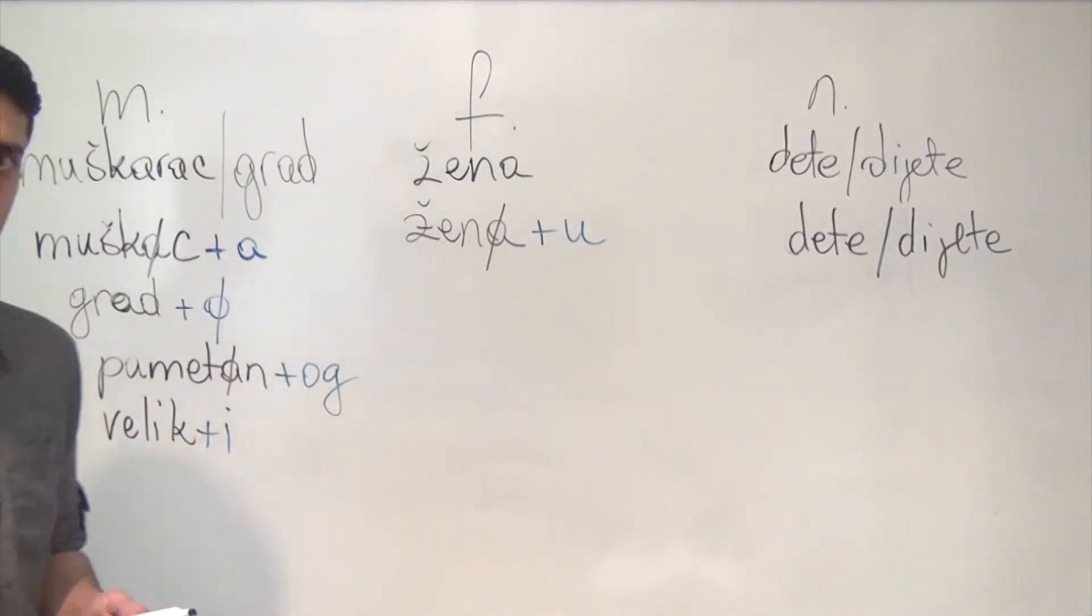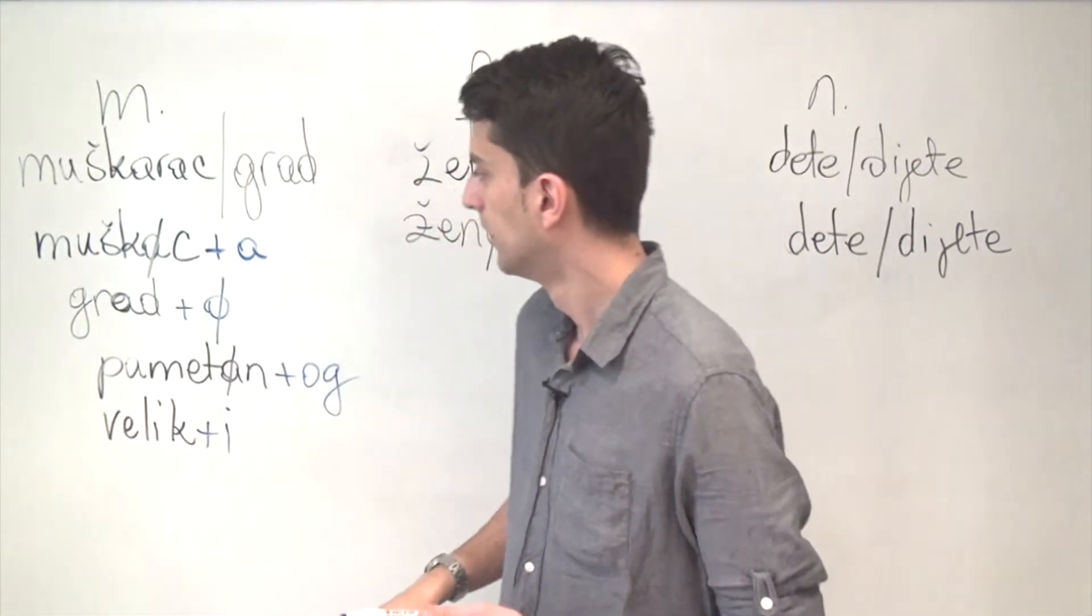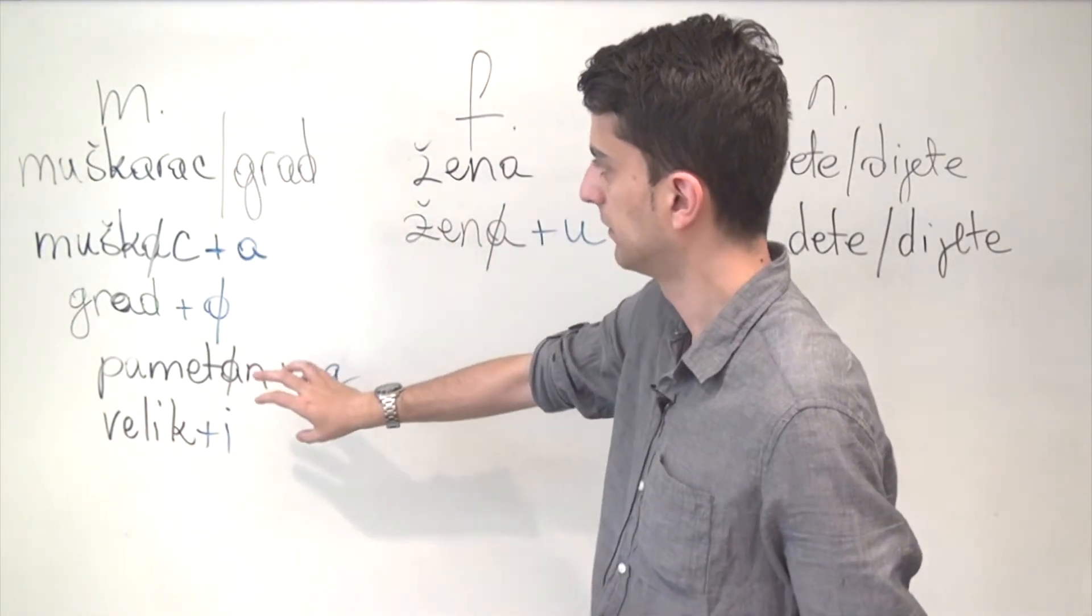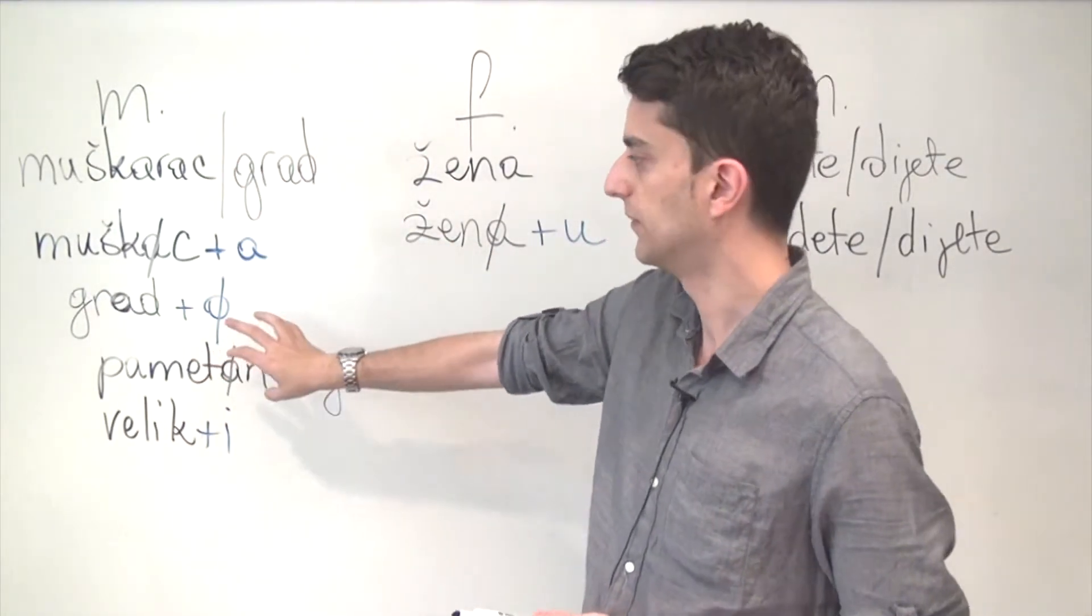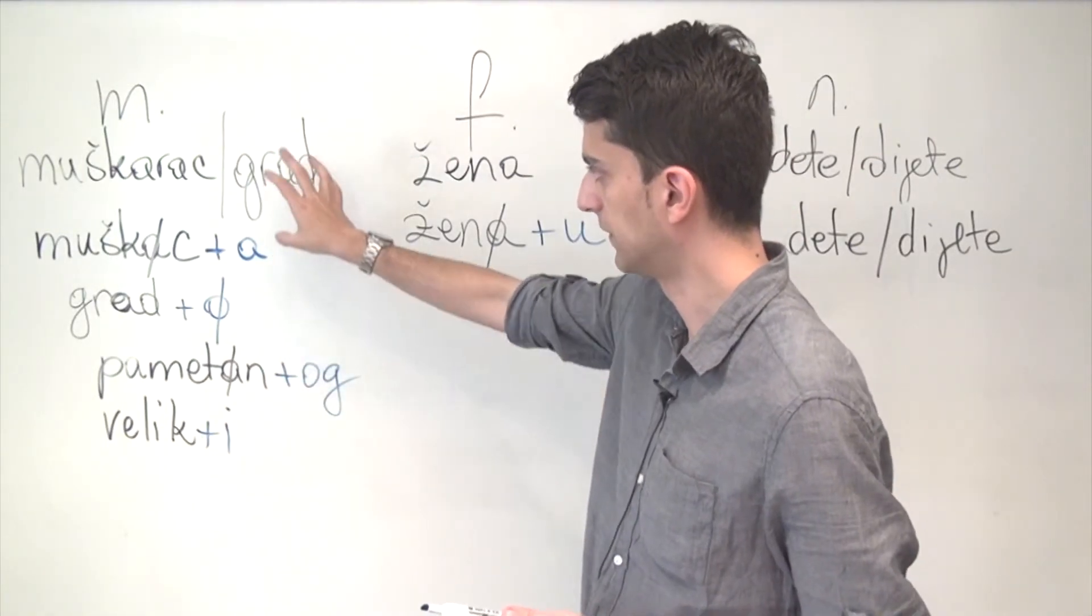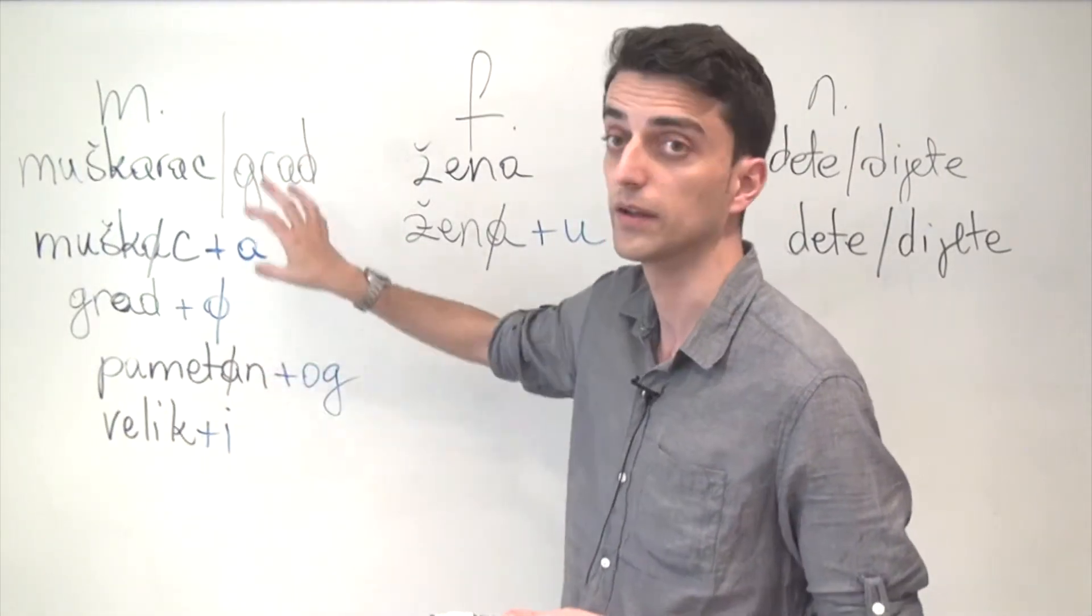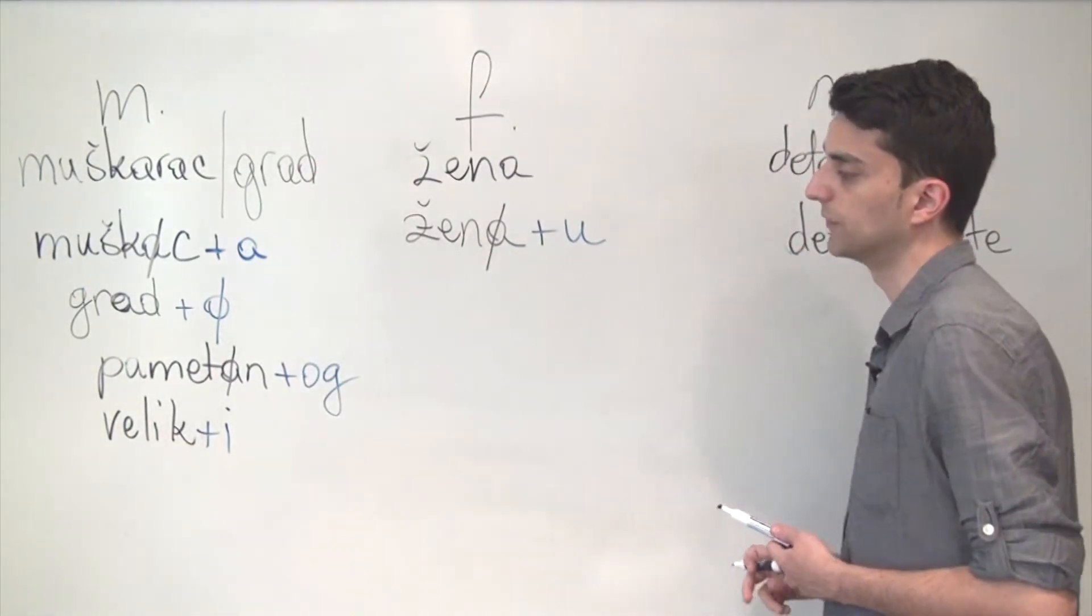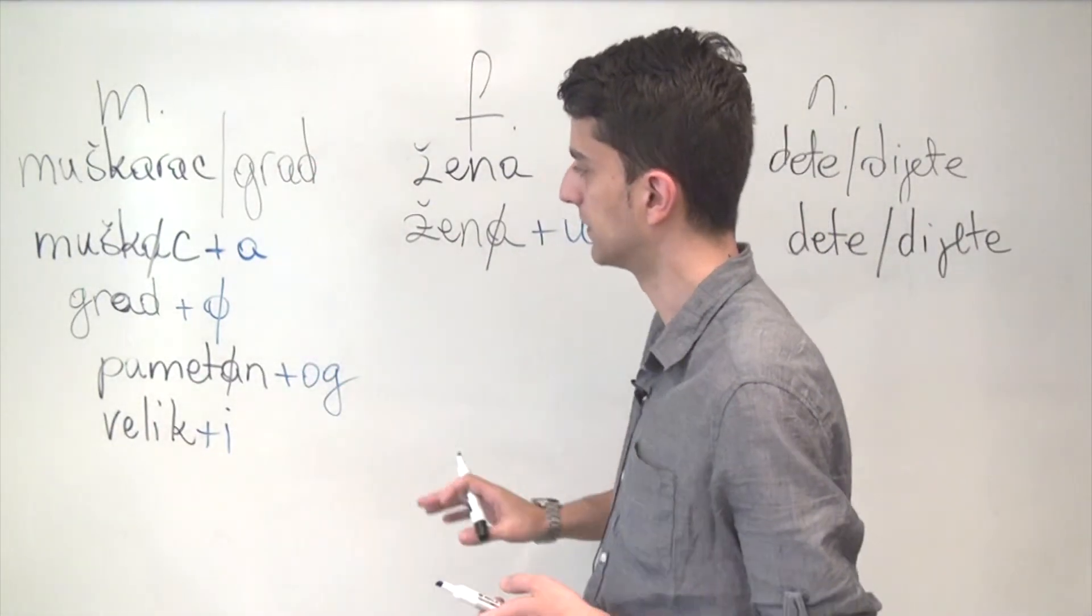So to use the same example like we used in a previous video, Volim Pametnog Muzkarca, I love the smart man, is obviously how you use this animate noun in a sentence. Volim Veliki Grad, I love the big city, is the other way of using it. And you'll probably notice the difference right there.